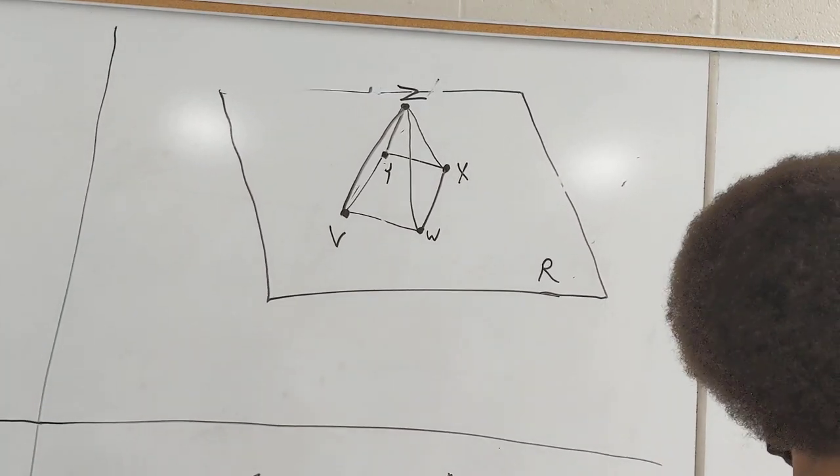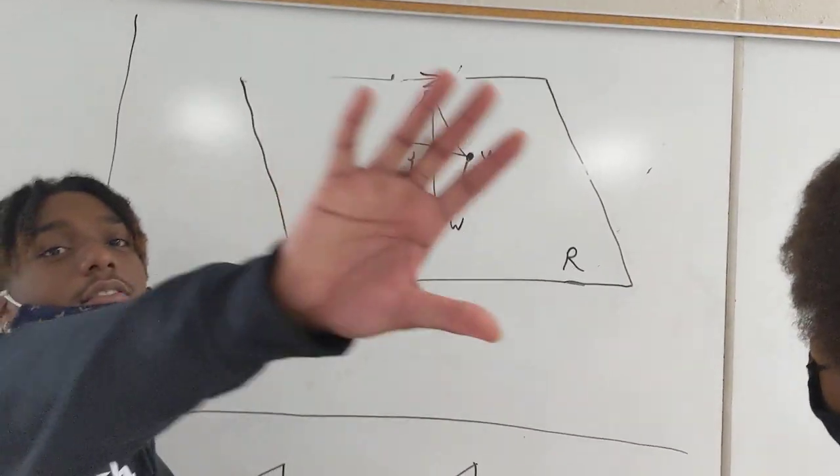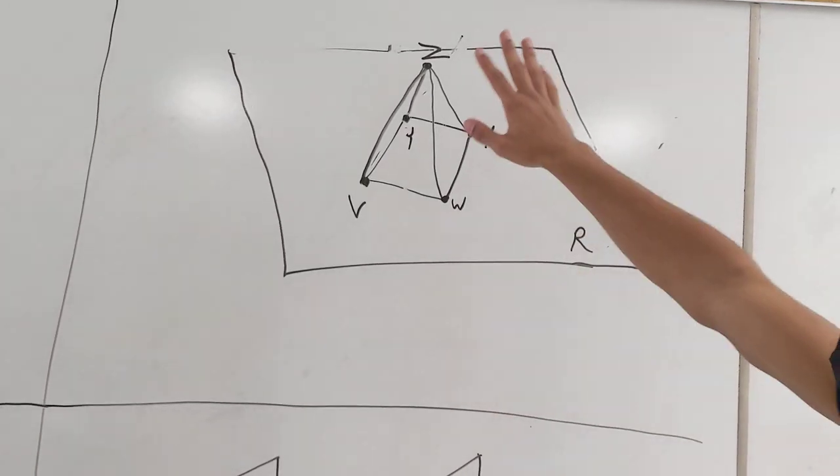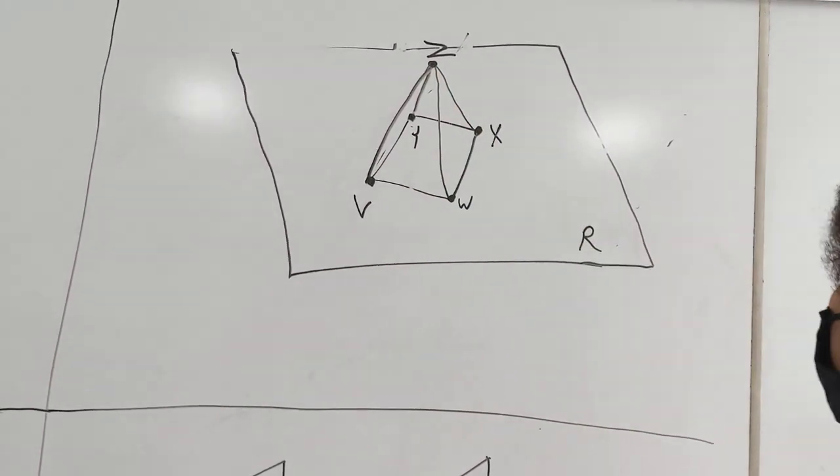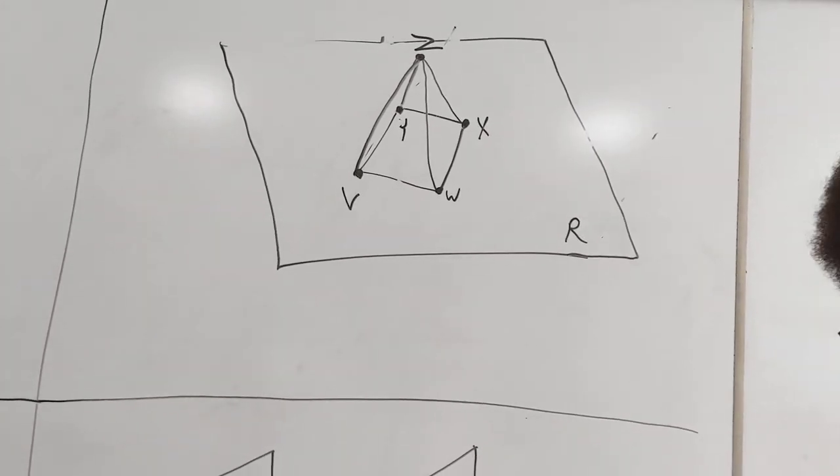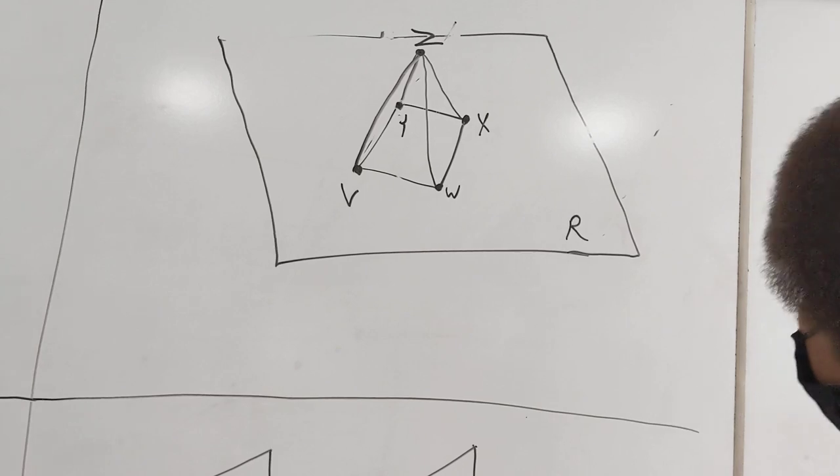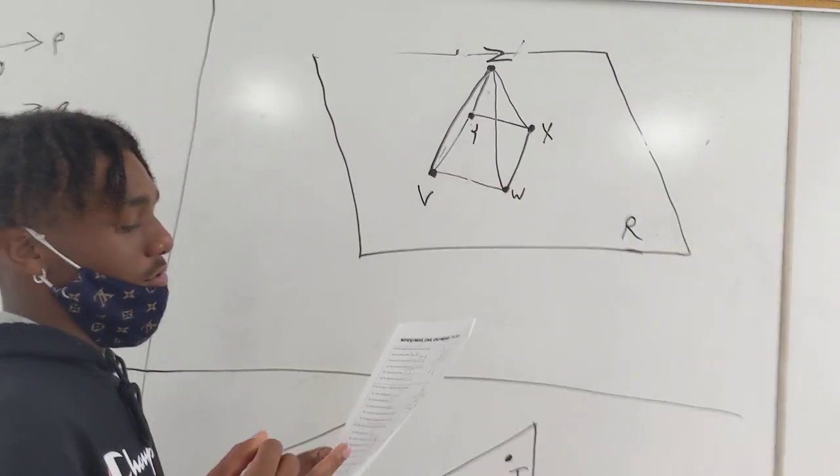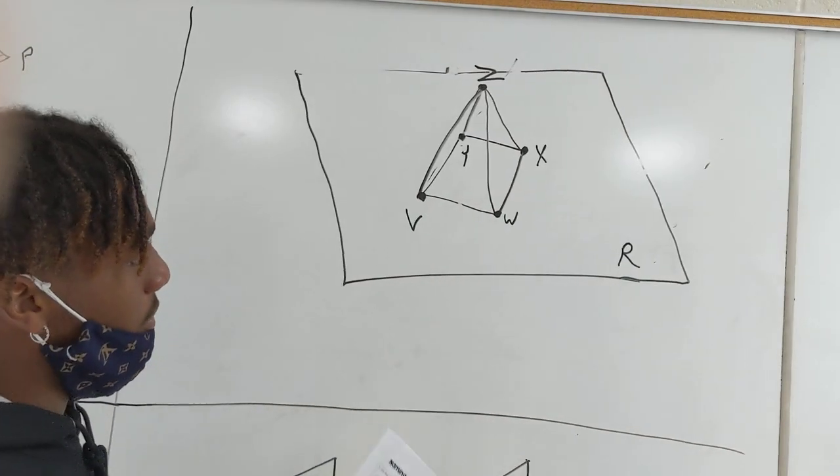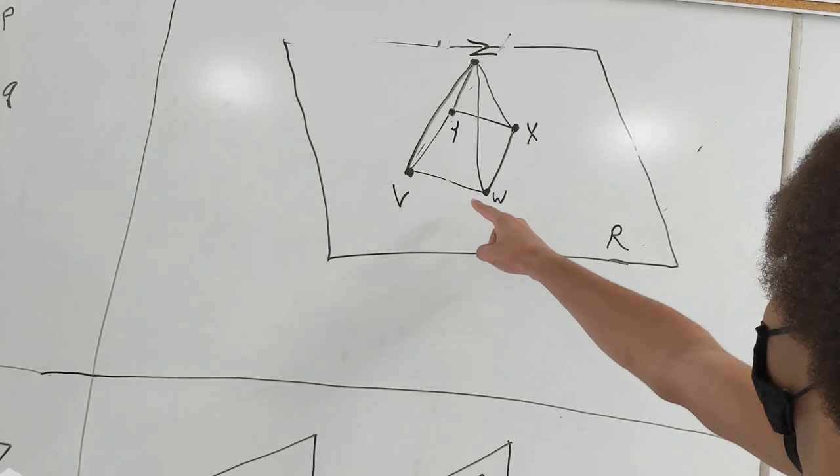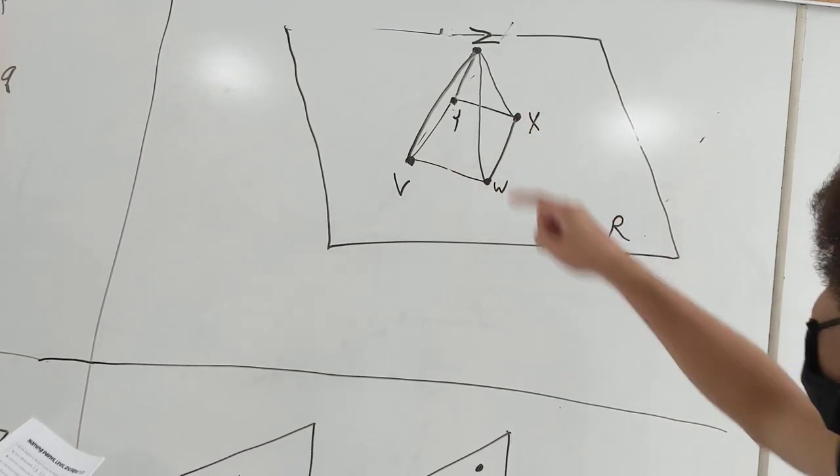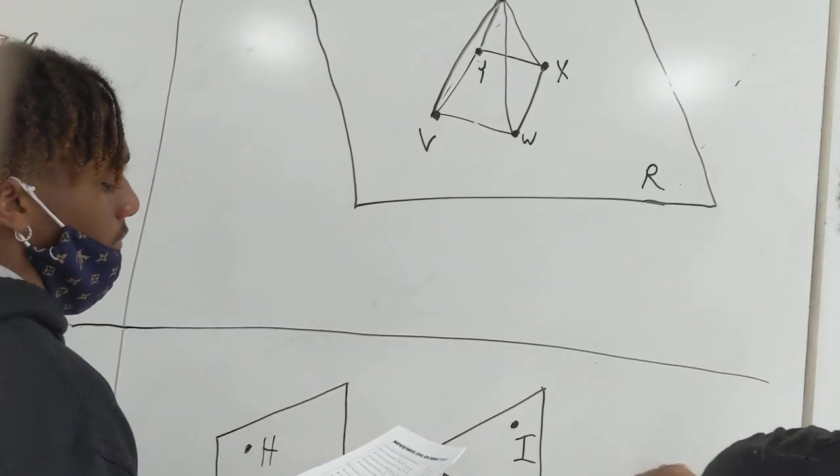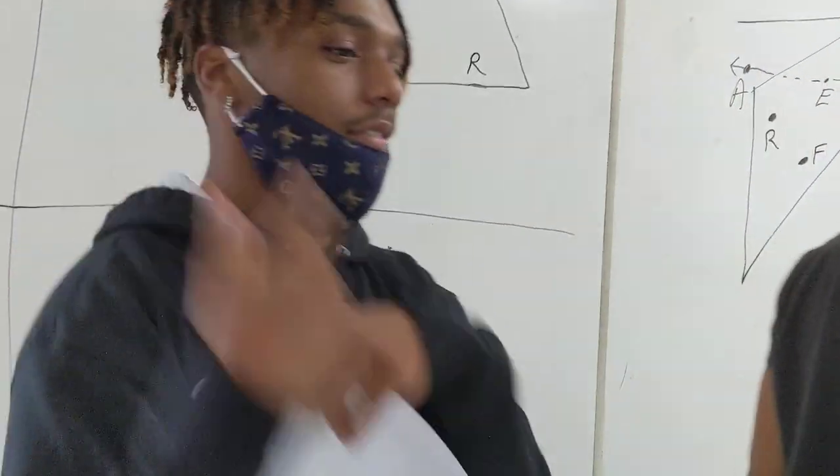And how many planes appear in the figure here? Very good. Can you point to them real quick? All right. And how many planes contain point W? And can you point to them? All right. So we have plane R, the plane just to the left, and the plane on the right. Very good. Thank you all. Good job.